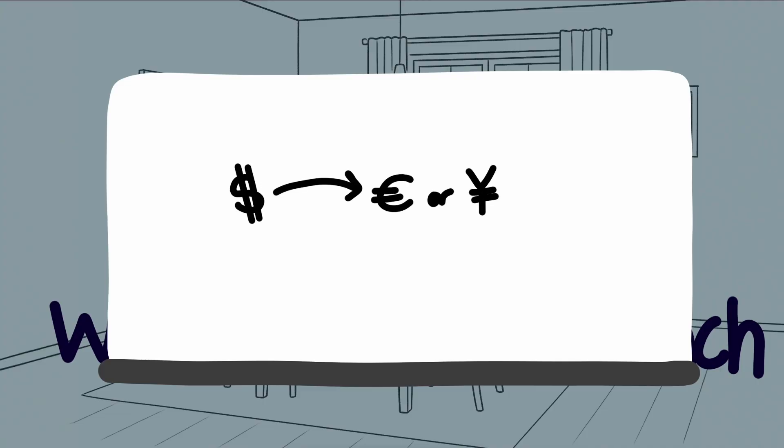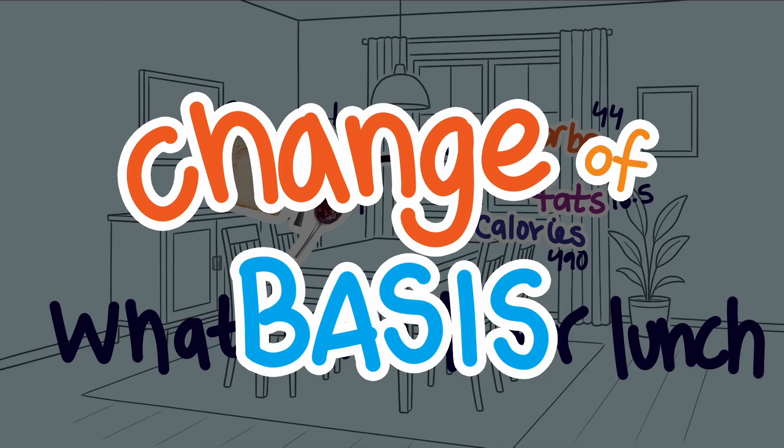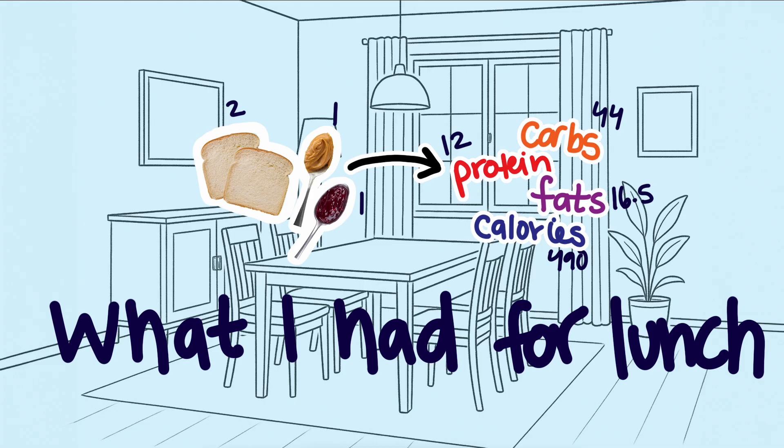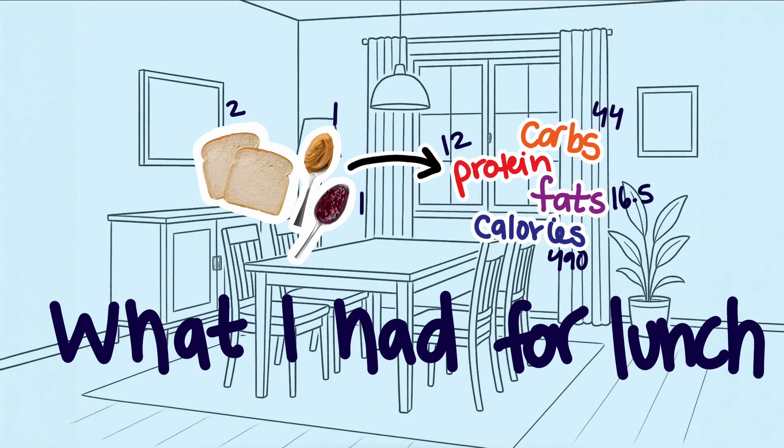In the same way that we convert dollars to euros or yen, the value of money is the same, even though the numbers are different. The difference is that in a food example, we have vectors of numbers and several different units to convert. In linear algebra, converting between multiple units like this is referred to as a change of basis, and it is done with the same operation as converting units, like dollars to euros, with a multiplication.